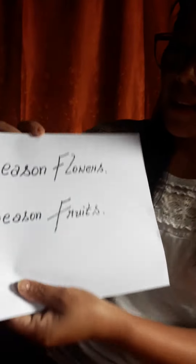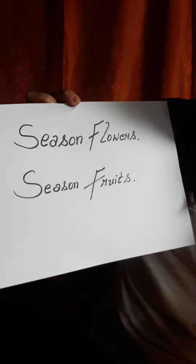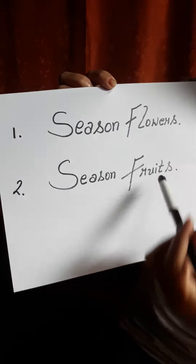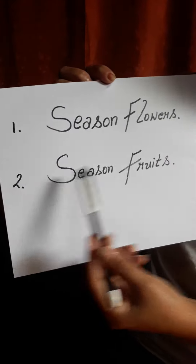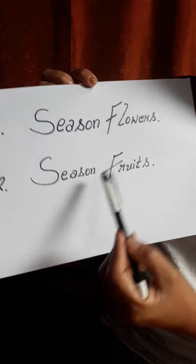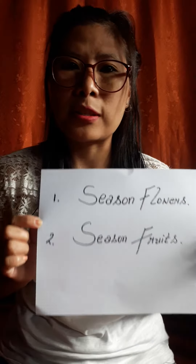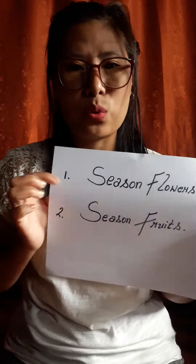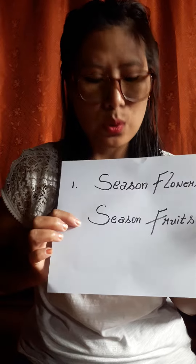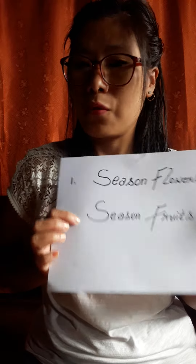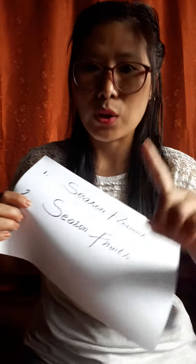The two topics are: number one, season flowers, and number two, season fruits. In these two topics you can choose any one. If you want to search season flowers, go through that; those who want to go through fruits, you can go through that. Only one topic.